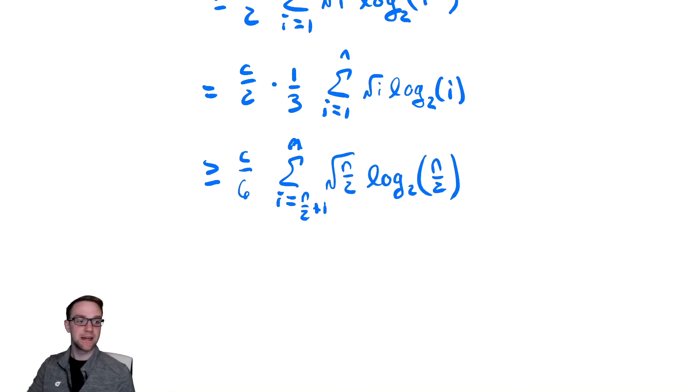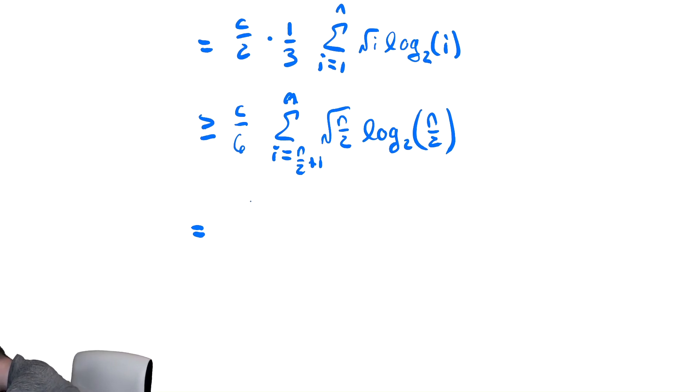And now we've eliminated i from the summation. So we can then take the number of terms and multiply by the summation and we get that this is equal to c over six times the number of terms which is n over two times radical n over two log base two of n over two.